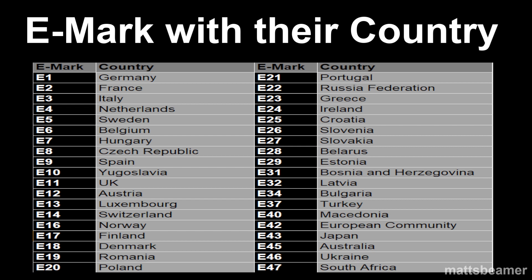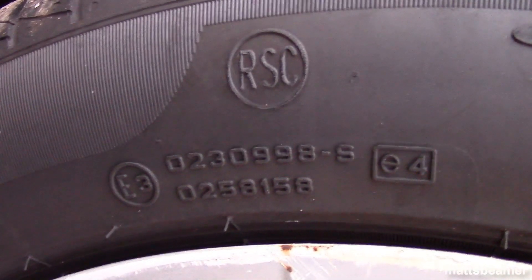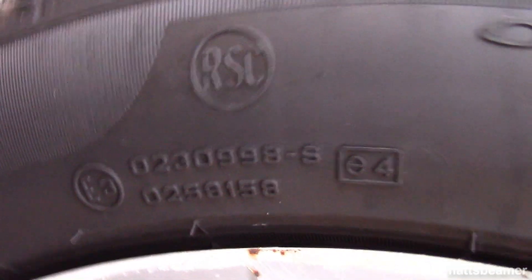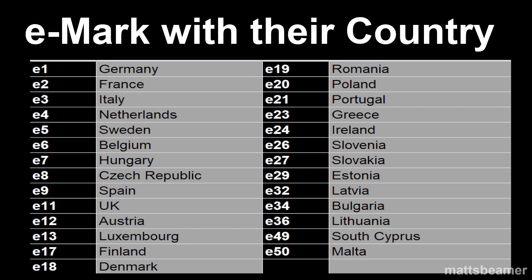So E3 is showing you that Italy approved it. The little e with a number afterwards in a rectangle is the EU Certification, referred to as the EC, and is based on the EU Directive. It is basically a safety certificate mark. Mine says E4, which means that Netherlands approved my tire, saying it is safe to use.